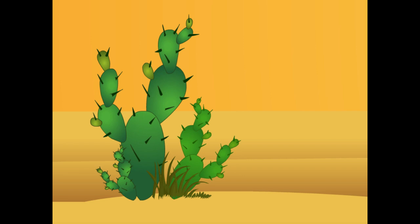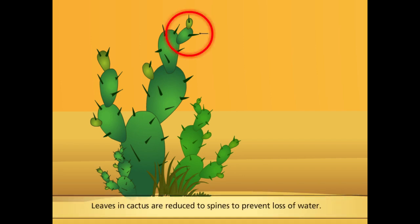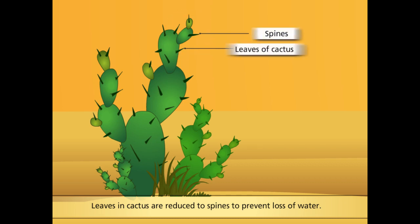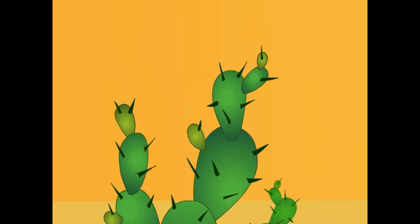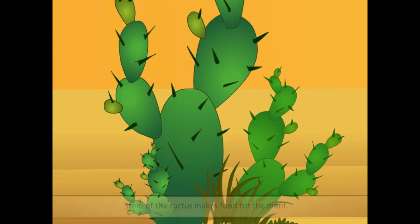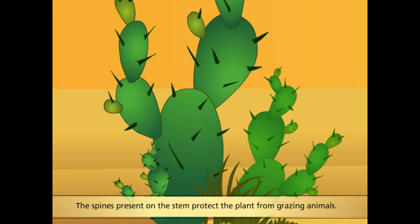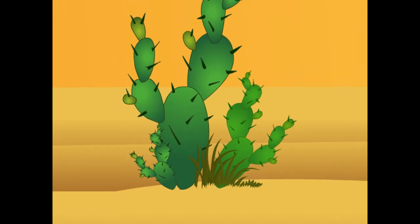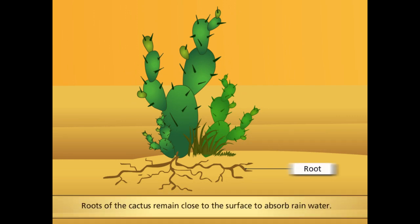You know that plants lose water through their leaves. In cactus, the leaves are reduced to spines, which prevents loss of water. The stem of the cactus is green. The green stem makes food for the plant. The spines present on the stem protect the plants from grazing animals. The roots of cactus do not go deep into the soil. They remain close to the surface so that they are able to absorb rain water even when there is less rain.